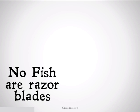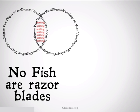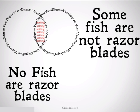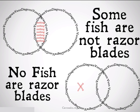Similarly, if our statement is 'no fish are razor blades' and our Venn diagram looks like that, and we want to conclude that some fish are not razor blades, we are not allowed to do that on the statement 'no fish are razor blades' alone. Once again, because it assumes the existence of at least one fish, which might not be the case. In this case, it's the existential fallacy for Boole.